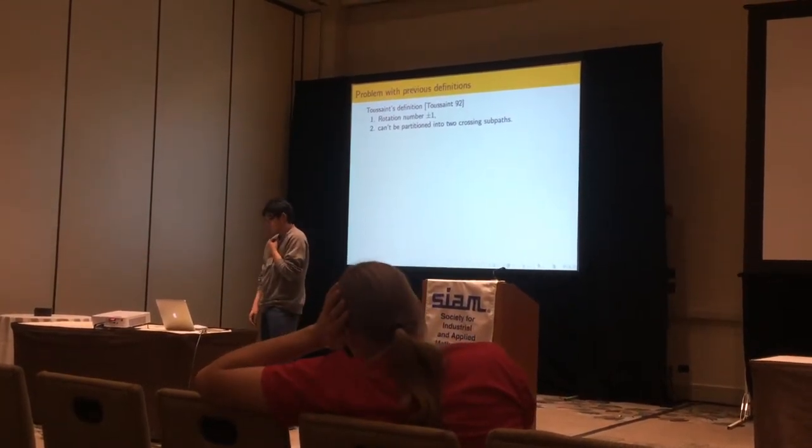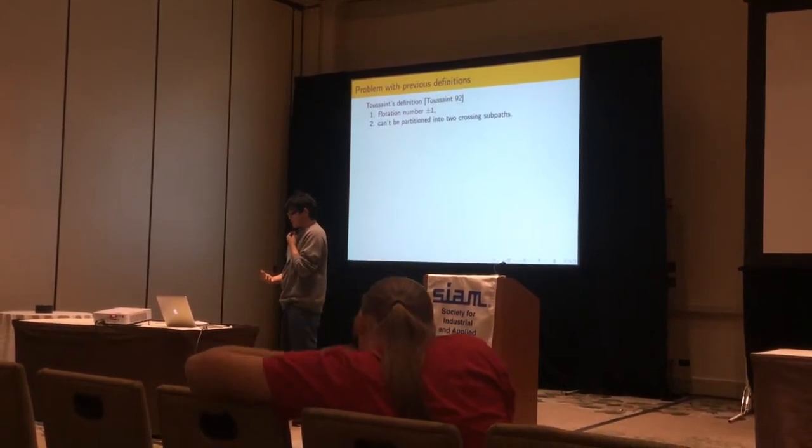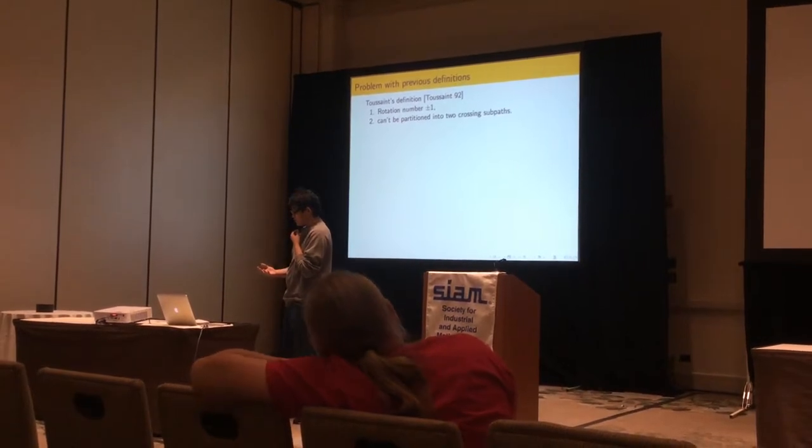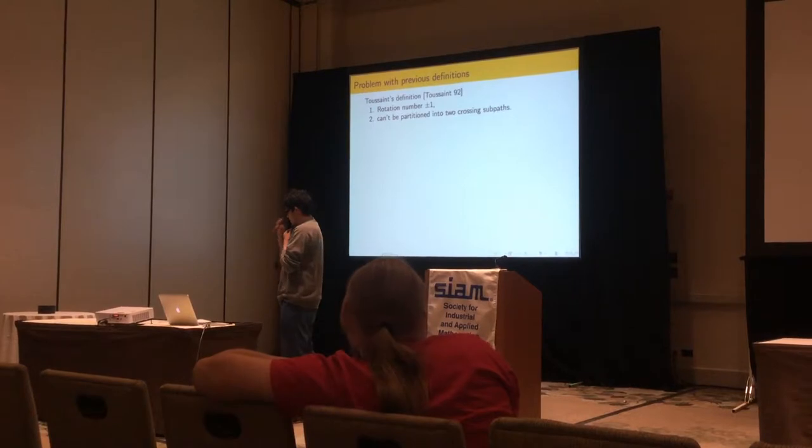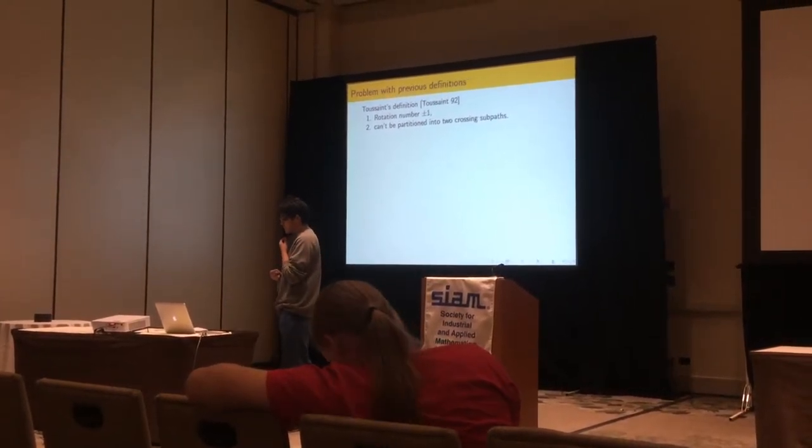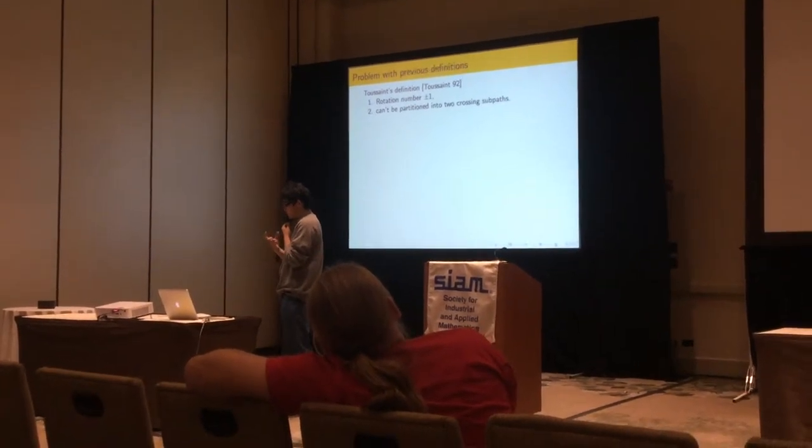So there are ways to try to capture this intuition. For example, Toussaint gave a definition. The polygon is weakly simple if its rotation number is plus or minus 1, and it cannot be partitioned into two crossing subpaths.